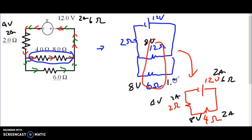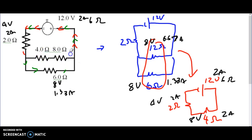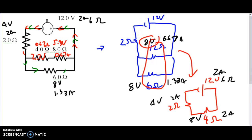With eight volts across the parallel branches, we can calculate branch currents: 8 divided by 6 is 1.33 amps, and 8 divided by 12 is 0.67 amps. The six ohm resistor is identical to our original, so that's 8 volts and 1.33 amps. The 12 ohm branch is a series simplification of the original two resistors, so both carry 0.67 amps. Knowing current and resistance, we get 2.7 volts and 5.3 volts across those two resistors — and 5.3 plus 2.7 equals 8 volts, confirming the circuit is correct.